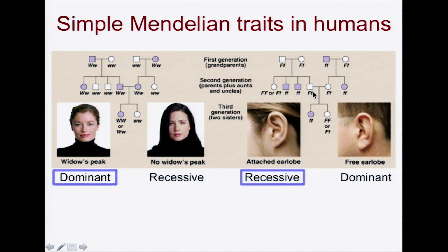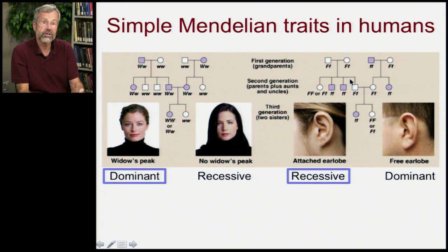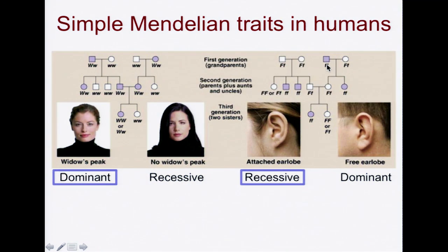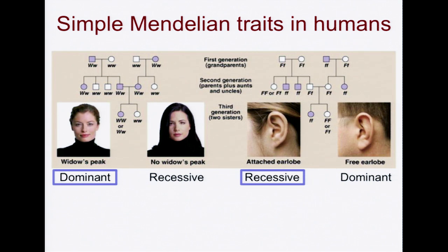Now in this trait, let's look at earlobes. I have an attached earlobe and that's a recessive trait. More commonly you see a free earlobe — an earlobe that hangs down — and that's a dominant trait. In this one, let's just track the history of this recessive trait. So out of the four grandparents for these two sisters, only one had attached earlobes; the other three had free earlobes. In the next generation, we see that it reappears — there are some with attached earlobes, some without. So that means these grandparents had to be heterozygotes in order to have children that both had an attached earlobe and other children that had a free earlobe. So then we have two heterozygotes here — they both would have had free earlobes, and one of them now shows the recessive trait with an attached earlobe.